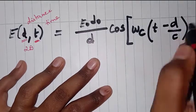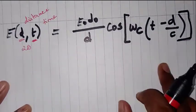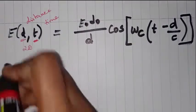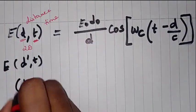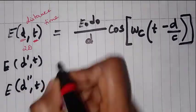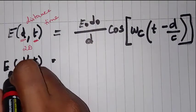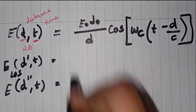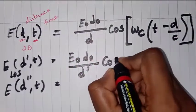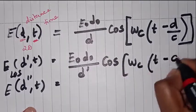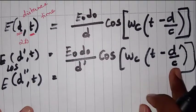In order to work with the 2-ray ground model, keep this general equation in mind. We calculate two different distances: for d', we get the line-of-sight equation — replacing d with d': E₀·d₀/d' × cos(ωc(t − d'/c)). Similarly, replacing d with d'', we get the ground reflected equation: E₀·d₀/d'' × cos(ωc(t − d''/c)).